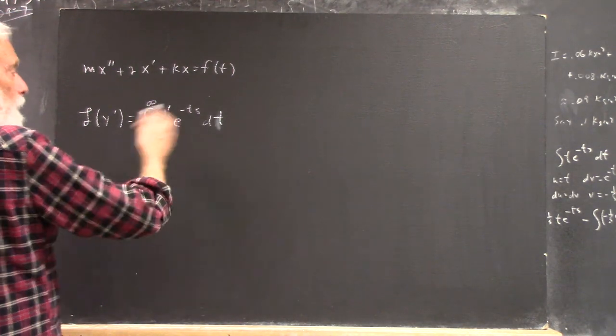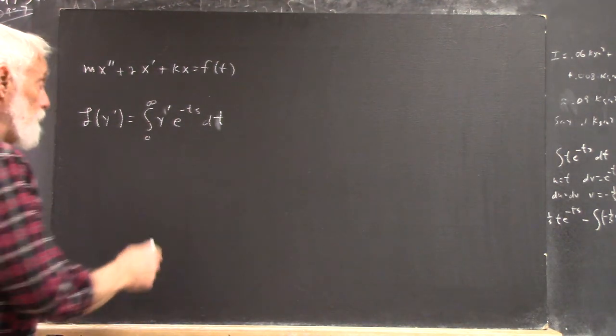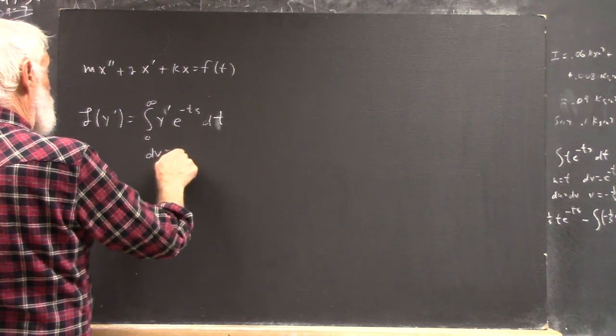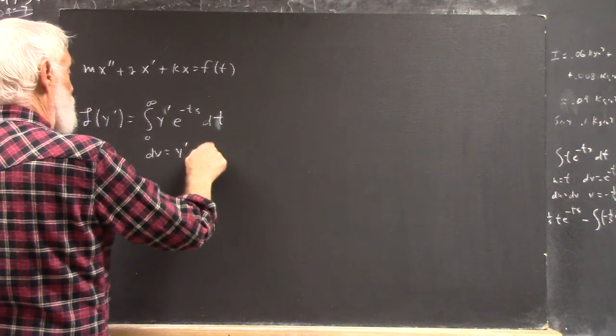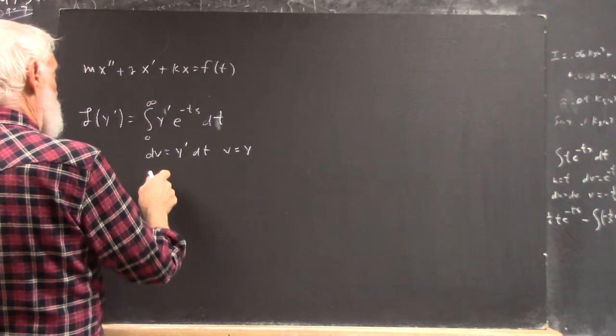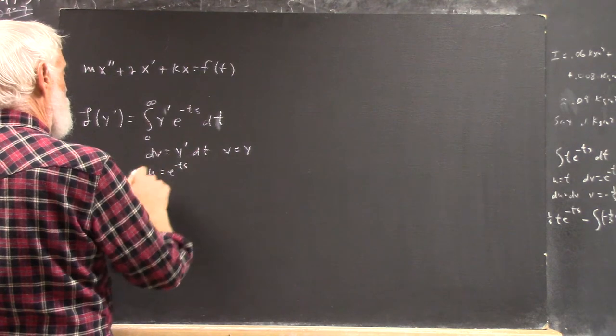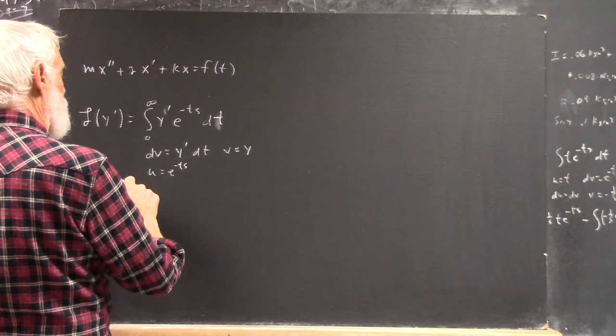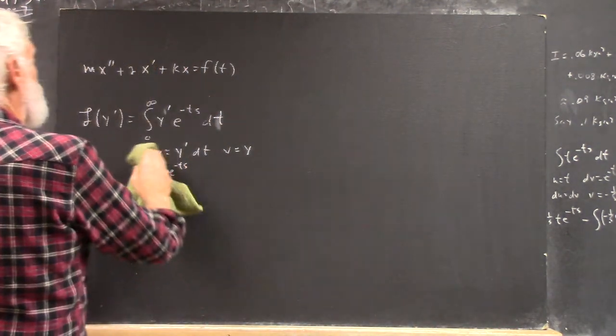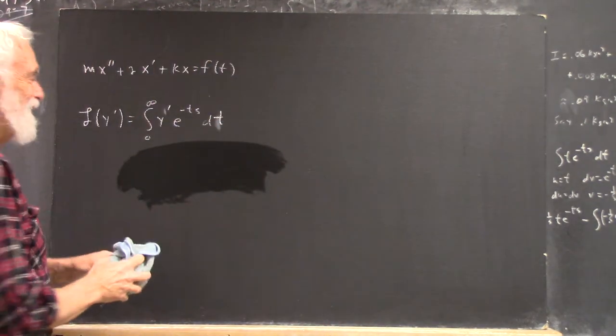Of course, y prime is the derivative of y with respect to t. So we integrate this. We do an integration by parts. We let dv equal y prime dt, so that v equals y. And we let u equal e to the negative st. And I've got that totally wrong. So I'm just demonstrating what can happen if you don't do it right in the first place. You fix it.